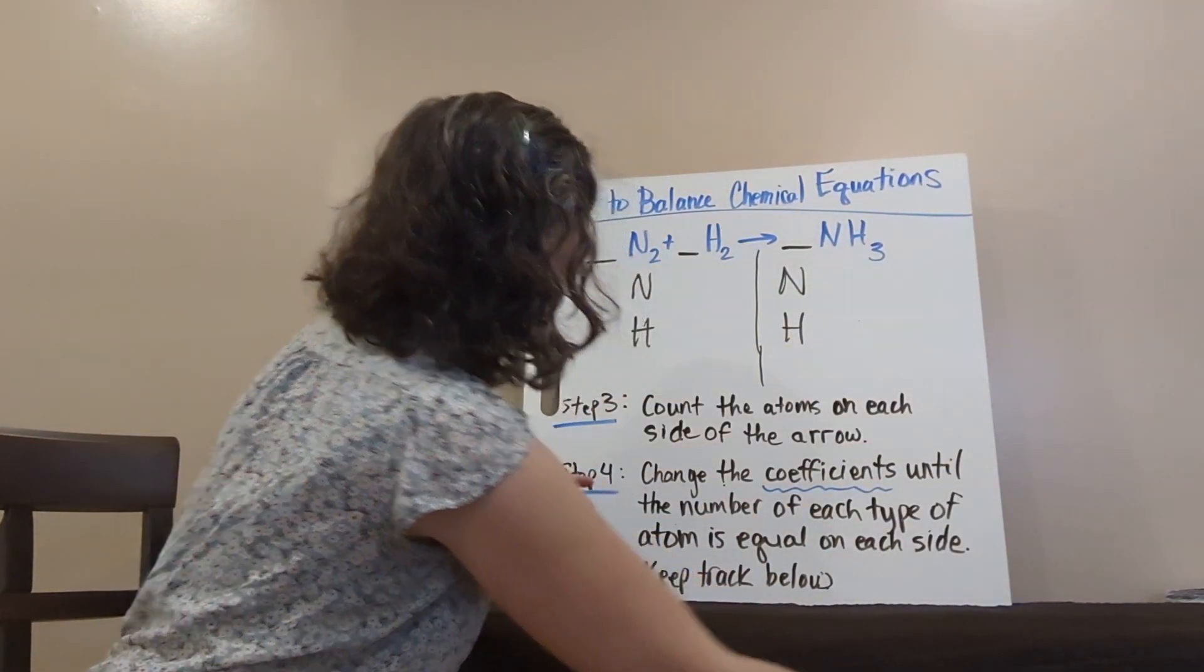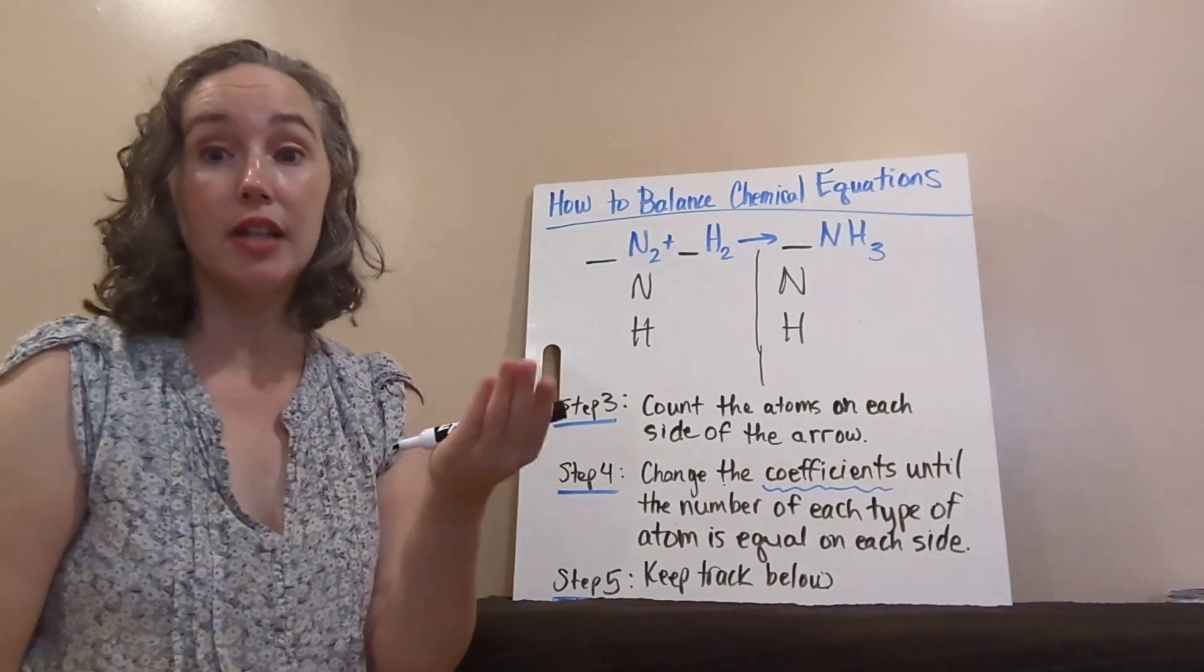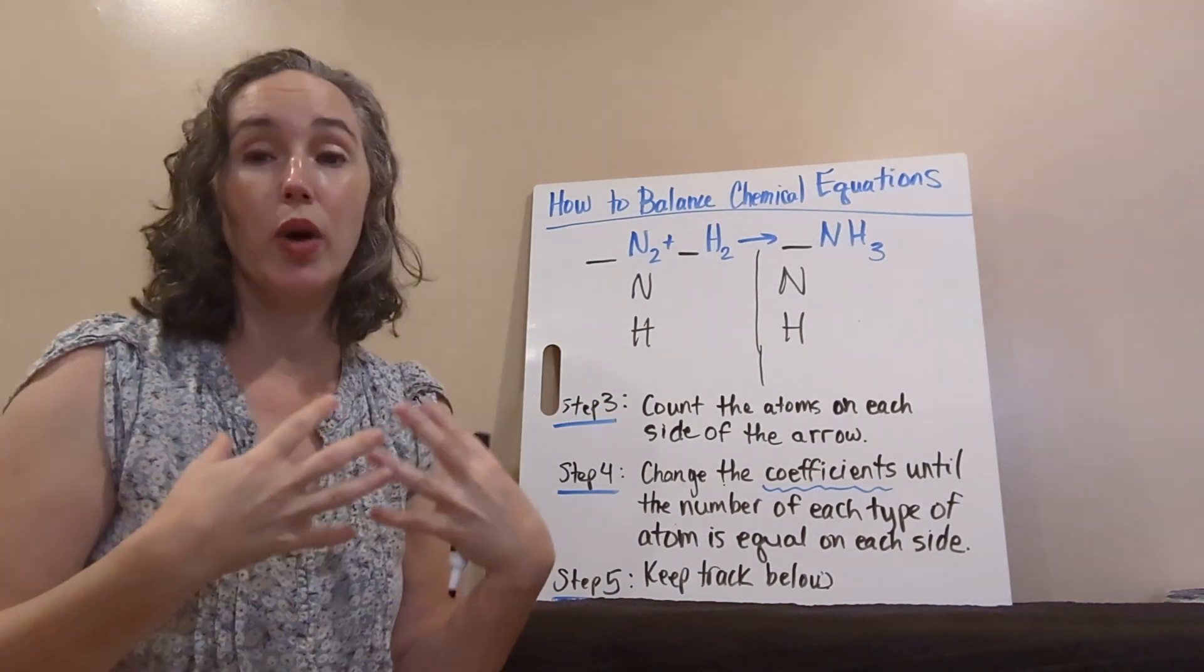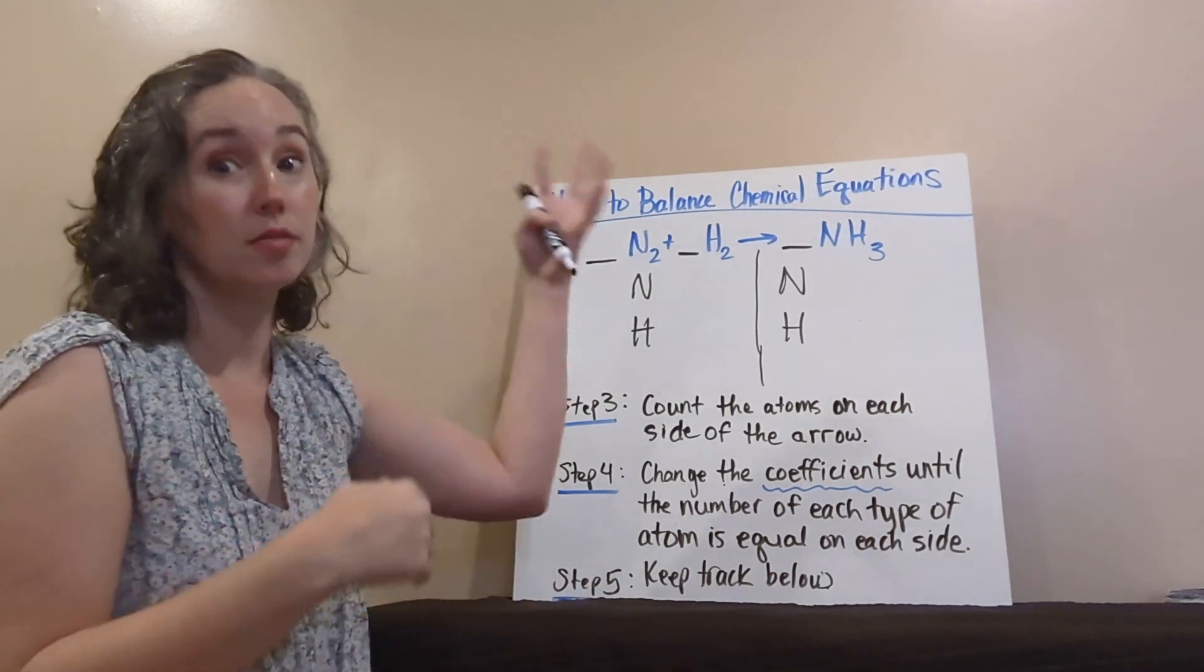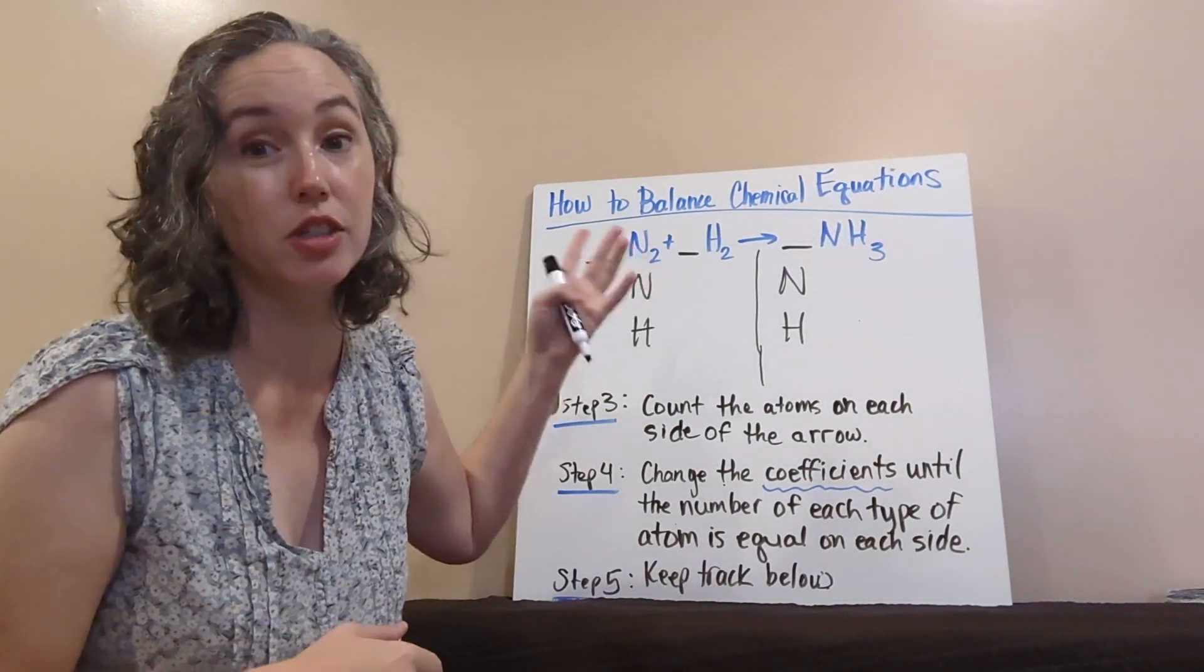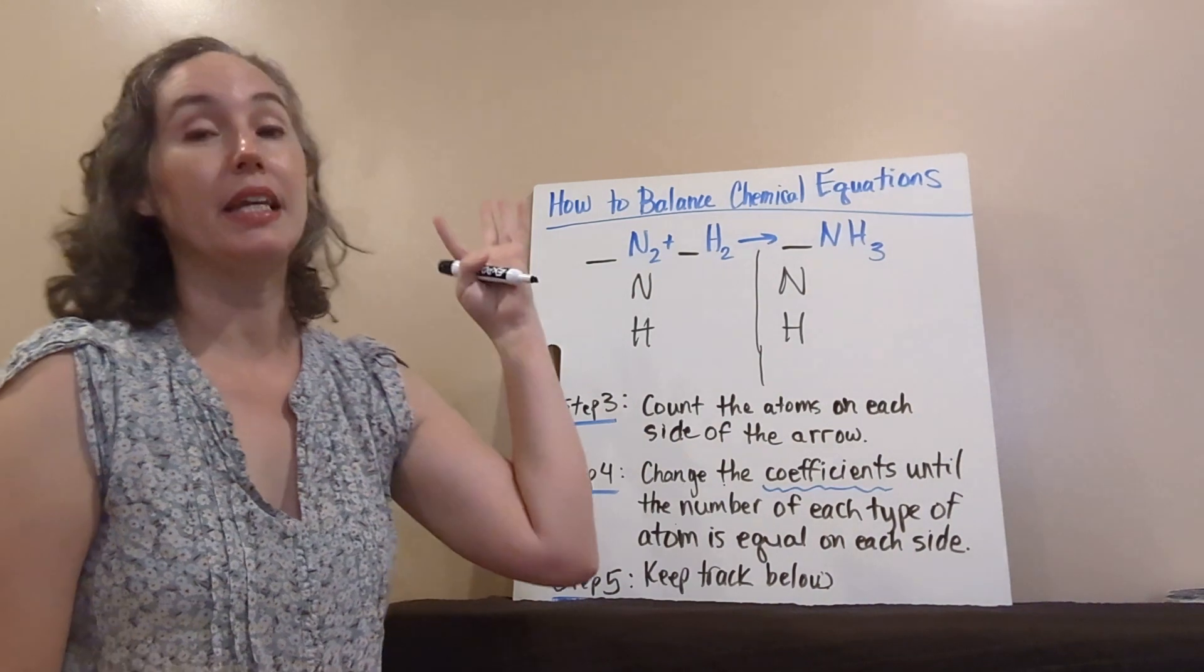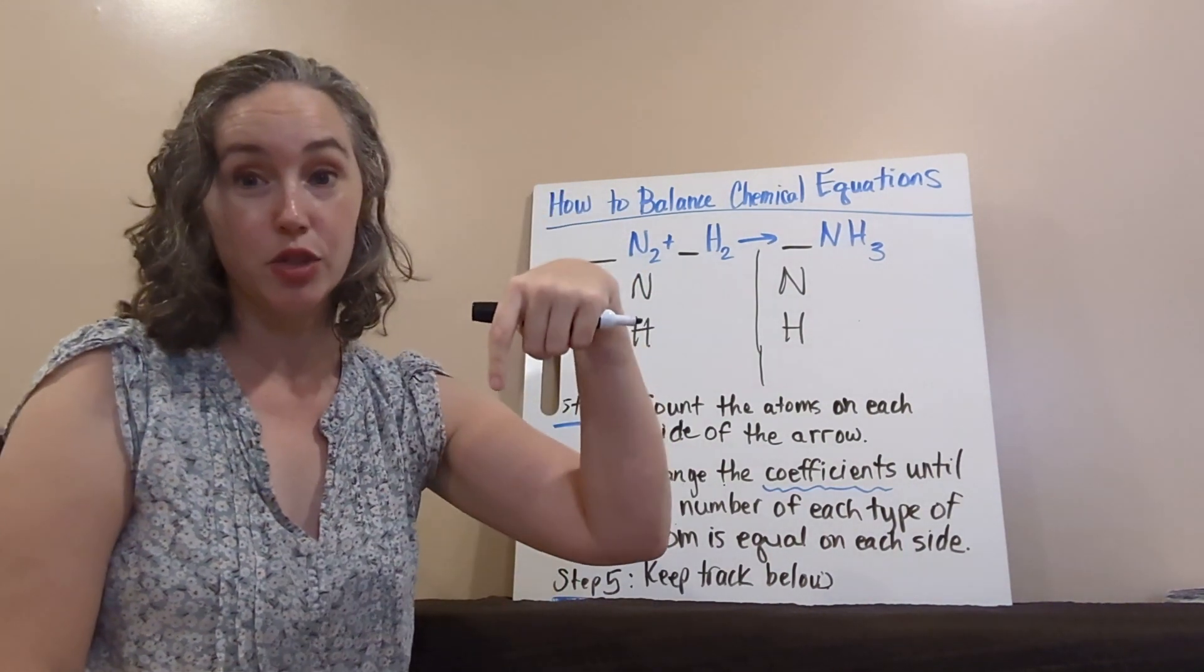Next, you're gonna count the number of atoms on each side of the arrow. This is where our counting atoms using the ESC method helps us. Here we go, that's why we needed to do that. The link to that video is in the description below.